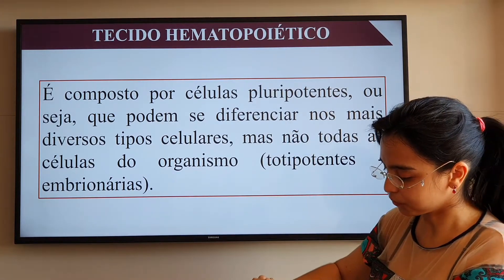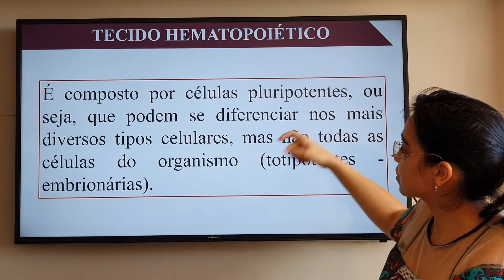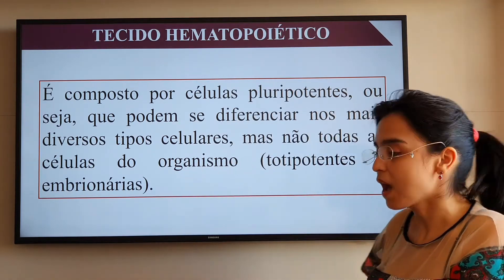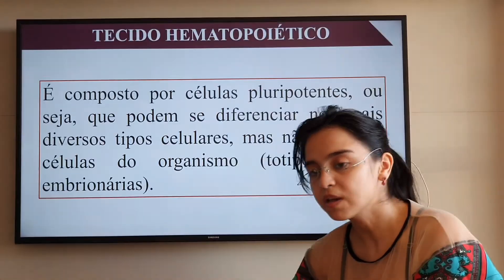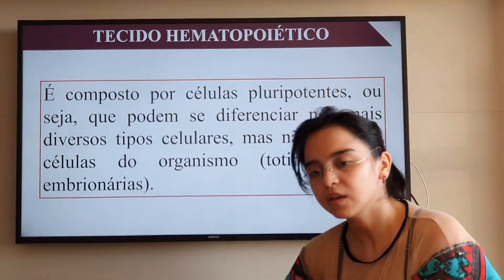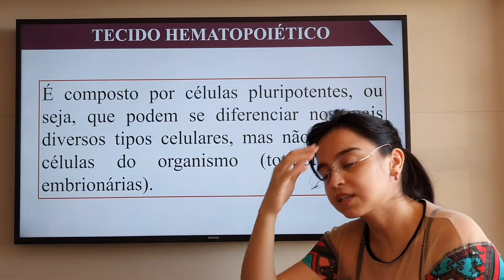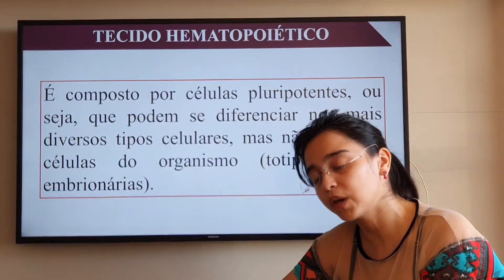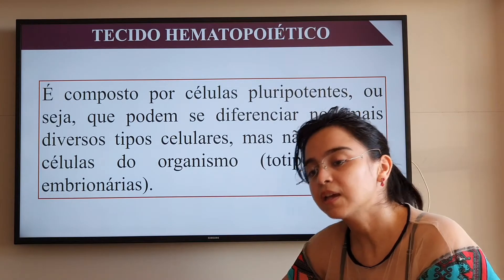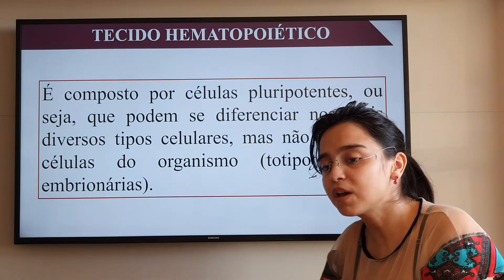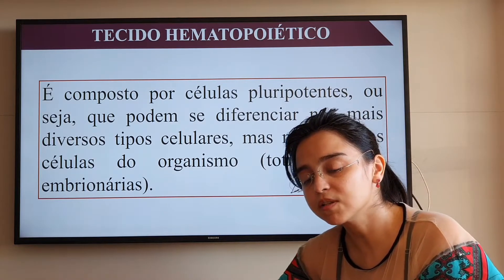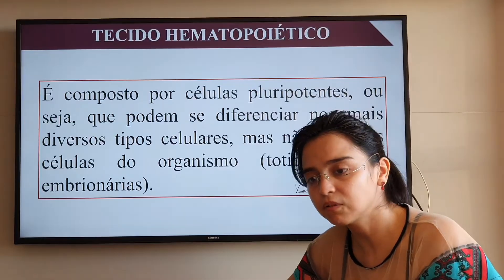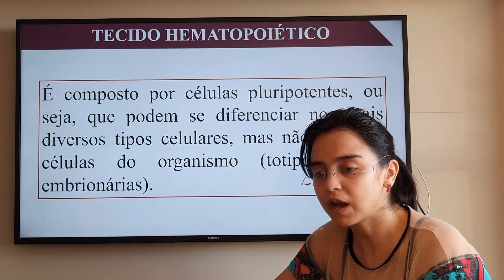Esse tecido vai ser composto por células pluripotentes, ou seja, que podem se diferenciar nos mais diversos tipos celulares, mas não em todas as células do organismo. A característica de células que podem se diferenciar em todo tipo de célula são as células-tronco totipotentes, que são as células-tronco embrionárias. Já as células que compõem a medula, o tecido hematopoético, são células-tronco pluripotentes, que apesar de poderem se diferenciar em muitos tipos celulares, têm uma restrição: vão se diferenciar apenas em células do tecido sanguíneo.